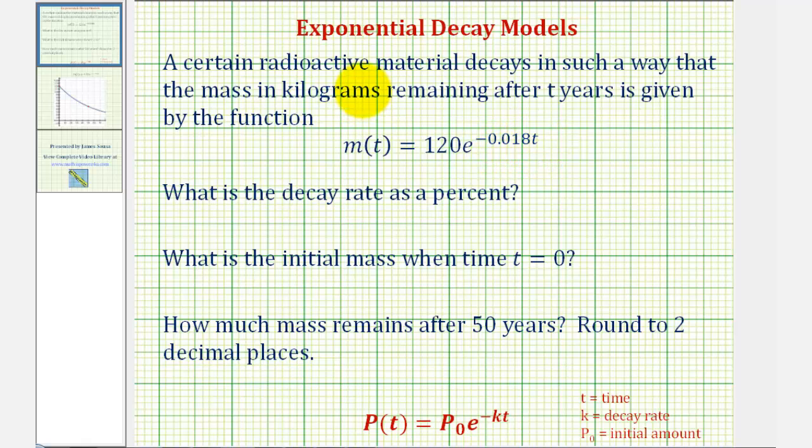The general form for an exponential decay model is P(t) equals P₀ times e raised to the power of negative kt, where t is the time, k is the decay rate expressed as a decimal, and P₀ is the initial amount.